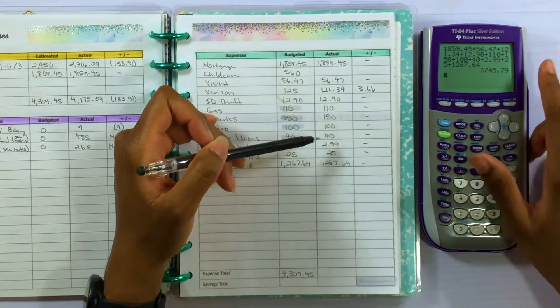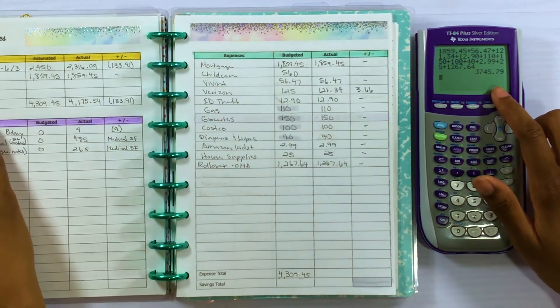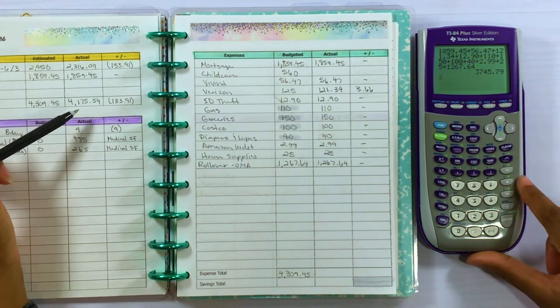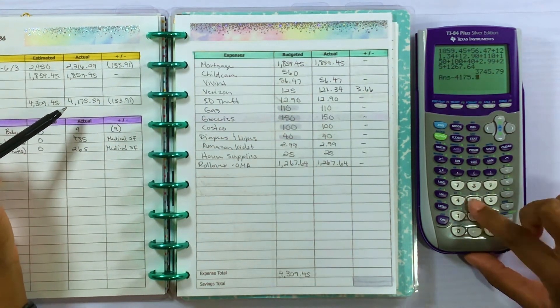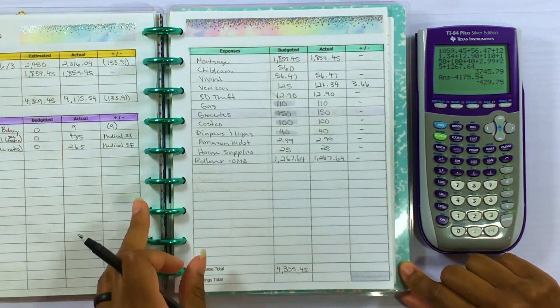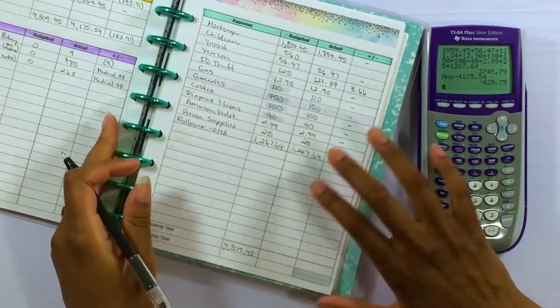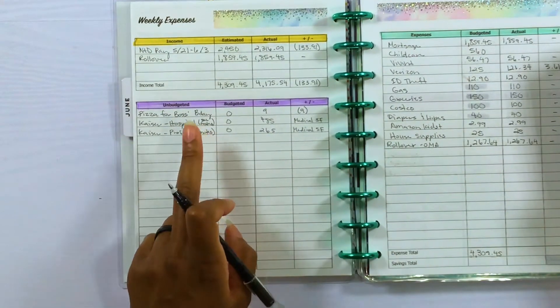Okay, so it came to $3,745.79, so minus the income that came in. Okay, so $429.75. Oh, you know what, before I do that I do need to add the unbudgeted right here.